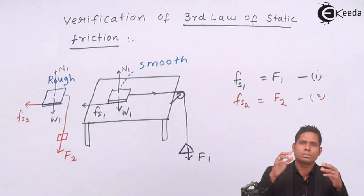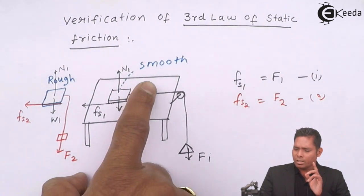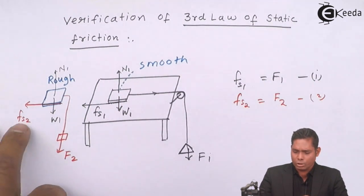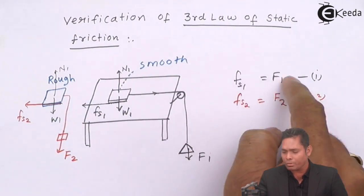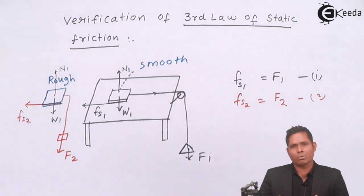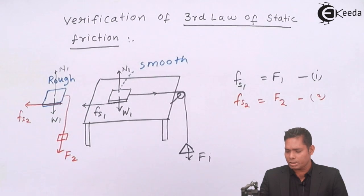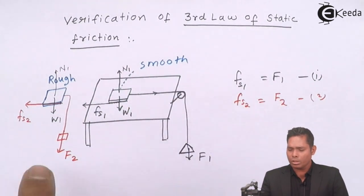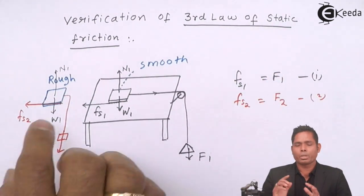In the first case this is smooth, and the second case is rough. So this frictional force should be more than this frictional force. Because the surface is smooth, the friction provided will be less. This will be more, and exactly it is found to be so. This f2 is greater than f1 because of the roughness and smoothness of the surface.